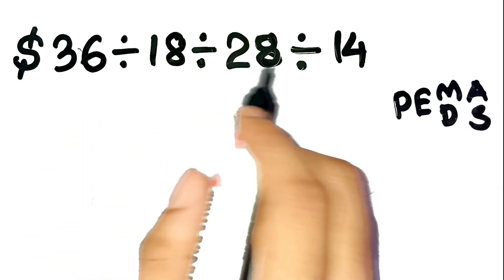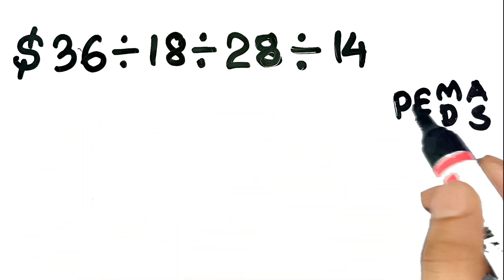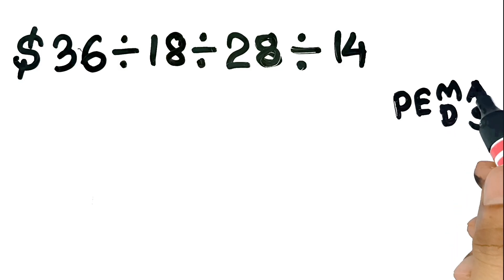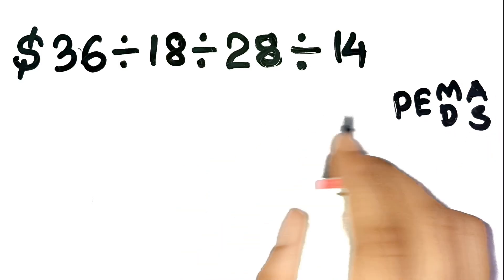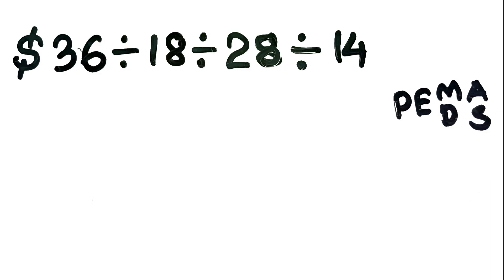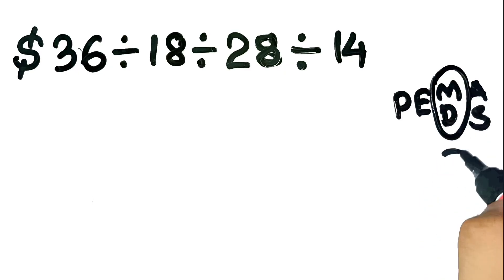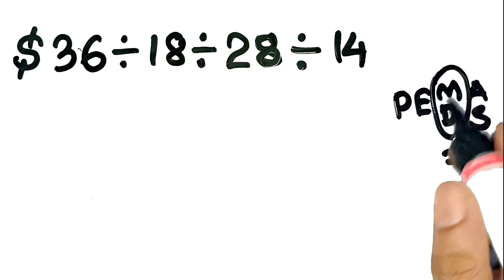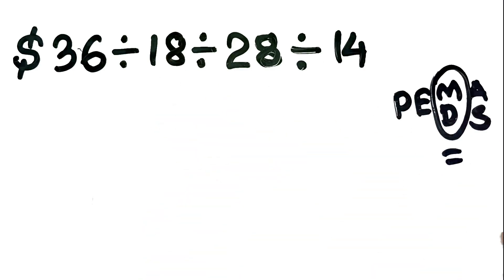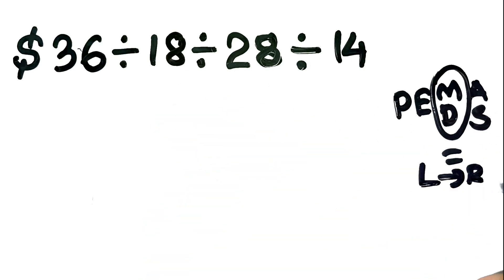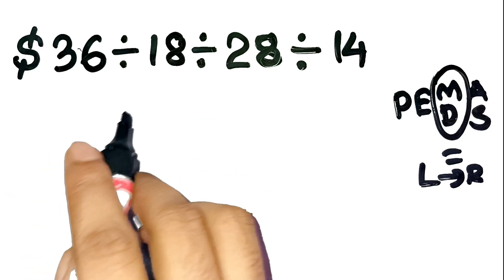We're supposed to follow PEMDAS, which stands for parentheses, exponents, multiplication, division, addition, and subtraction. But here's the thing most people forget: division and multiplication have equal priority. So we don't just jump around — we solve them strictly from left to right, just like reading a balance sheet in order, not skipping numbers.